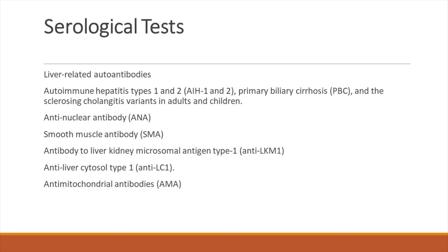Next we come to the serological tests — these are liver-related auto-antibodies which are formed. We do come across autoimmune hepatitis type 1 and 2 and also sclerosing cholangitis in children, and primary biliary cirrhosis in adults. The serology tests we do usually are ANA, ASMA, anti-LKM, anti-LC1. These are basically cytosolic and intra-hepatocyte antigens which, due to certain injury, get exposed in the blood and against which auto-antibodies are formed. Sometimes we tend to get falsely positive auto-antibodies in the setting of viral hepatitis, where a lot of hepatocellular destruction has happened and these antigens have been exposed in the blood.